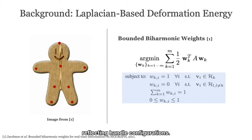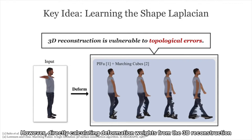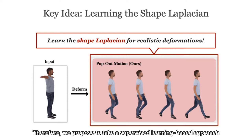This deformation energy A is calculated based on the topology of the source shape. However, directly calculating deformation weights from the 3D reconstruction often results in implausible deformations, since most existing methods of image-based 3D reconstruction are vulnerable to topological errors. Therefore, we propose to take a supervised learning-based approach to predict the shape Laplacian of the 3D reconstruction.